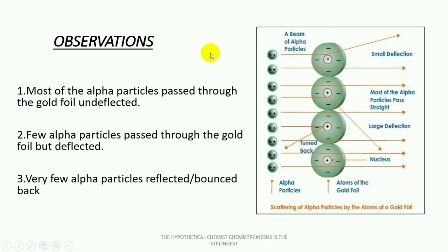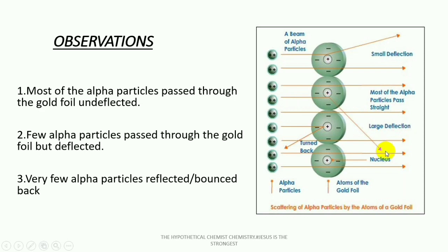Second, he observed that few alpha particles passed through the gold foil but were deflected. We can see this one was able to pass through but deflected — it wasn't straight like the undeflected ones. This one also was able to pass through but also deflected.